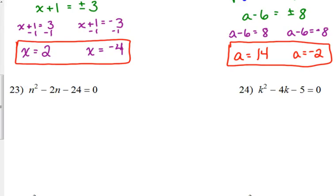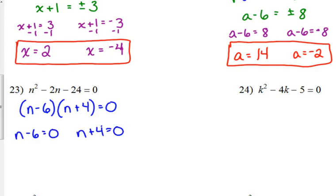So, since this one is already set up, I'm just going to go back and I'm going to do this one by factoring. Because, obviously, completing the square is a more involved process. If I can factor it, why not go ahead and factor it? So, we get n minus 6 is equal to 0. n plus 4 is equal to 0. So, 6 and negative 4 are our solutions.